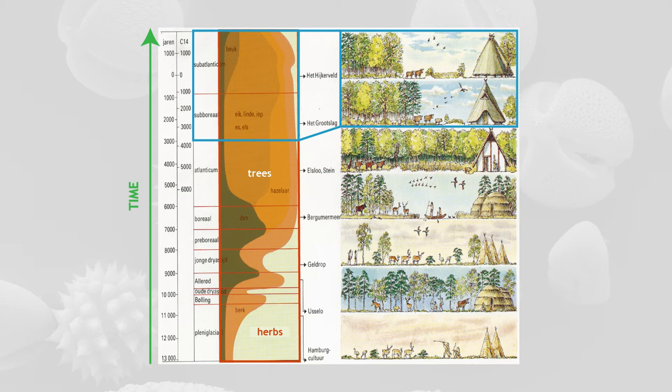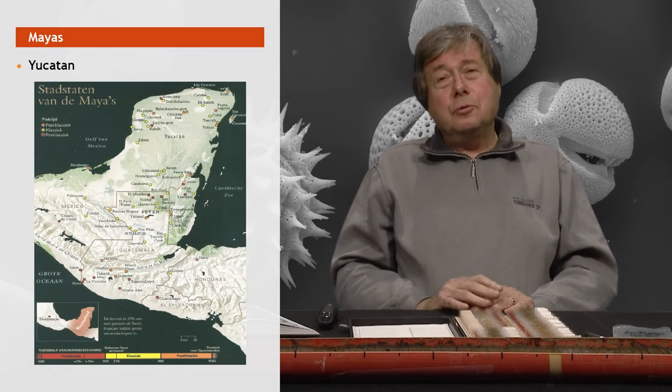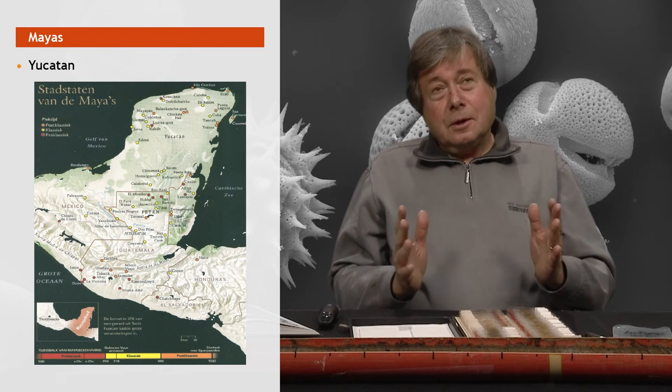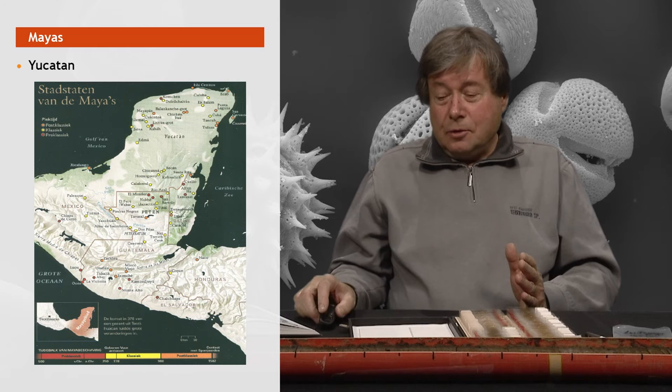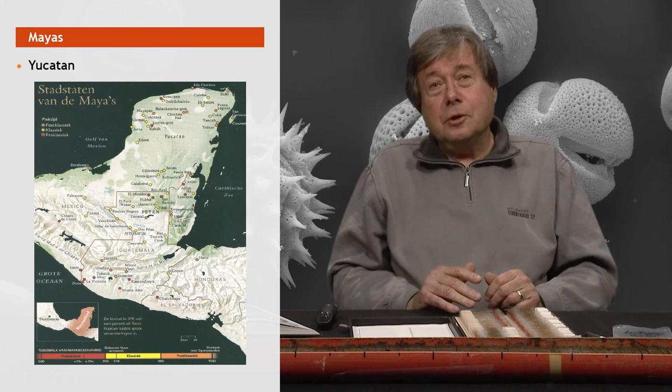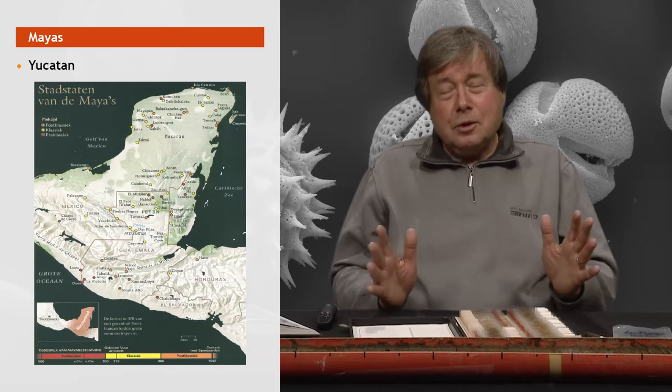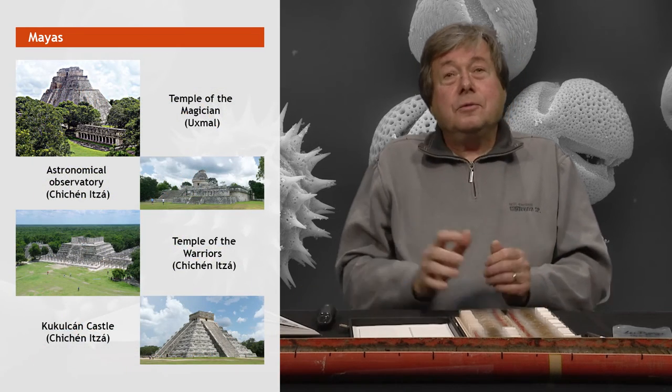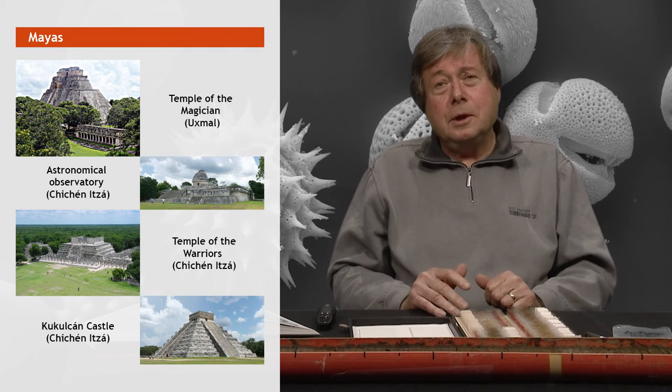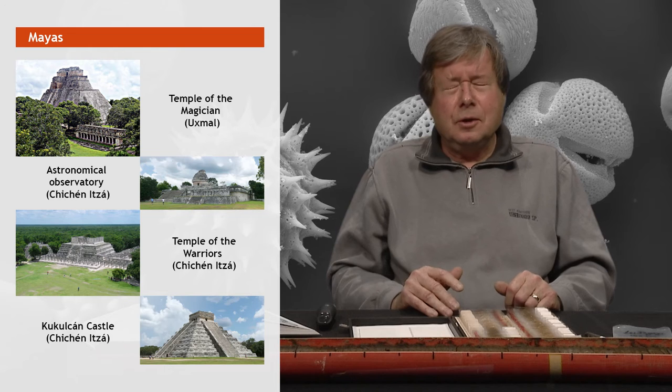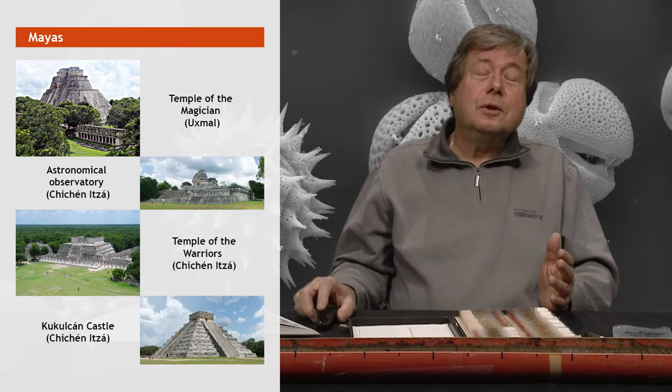Well now we make the step to the Mayas. And we go to Yucatan in southern Mexico. And Yucatan is geologically speaking a remarkable part of the world because it is built up of limestone, of calcium carbonate. Well the Mayas lived there for some 2,000 years and they built huge cities. And you see many different buildings here and that must have been large cities. And most cities probably had 30,000 to 40,000 inhabitants. So that means that agriculture and the production of food is very important to let these cities survive.